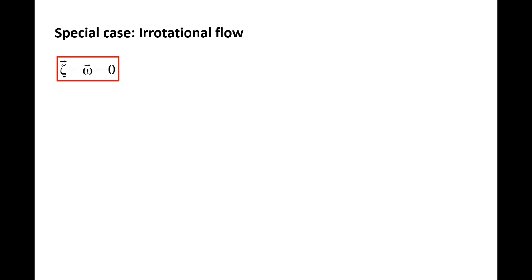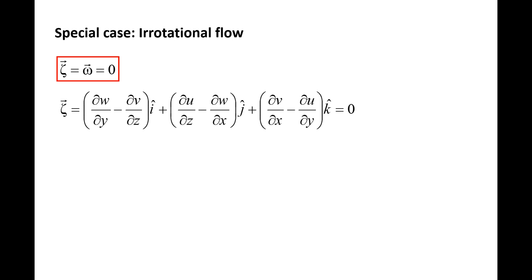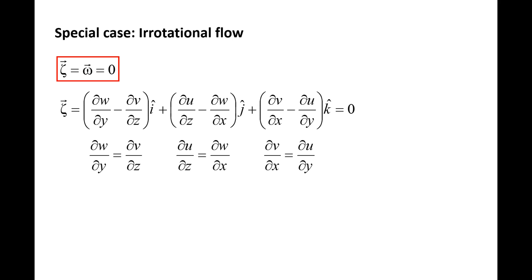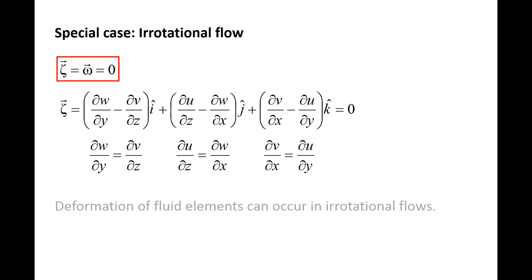A special case occurs when the vorticity is equal to zero. We call this type of flow irrotational. Expanding the vorticity vector, a flow can be irrotational if all three components of this vector are zero. This means partial w partial y equals partial v partial z, partial u partial z equals partial w partial x, and partial v partial x equals partial u partial y. All three equations must be satisfied for a flow to be considered irrotational. Notice that velocity gradients can still be present in an irrotational flow, so fluid elements can still deform in such a flow.